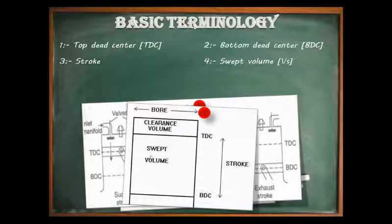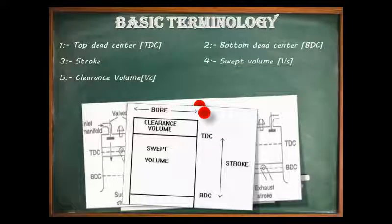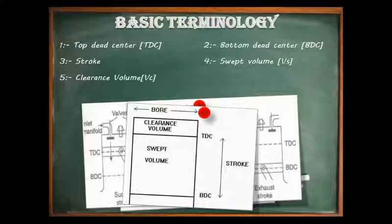The fifth term is clearance volume. Clearance volume is the remaining space in the combustion chamber — that is, in the cylinder — when the piston is at the top dead center. As shown in this figure, the volume above the TDC is known as clearance volume.